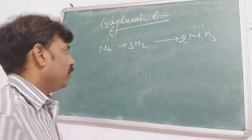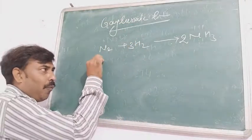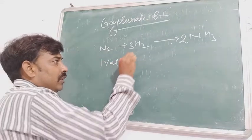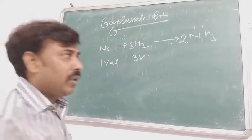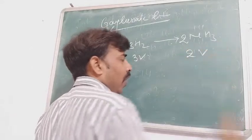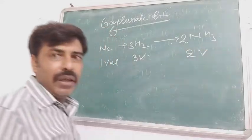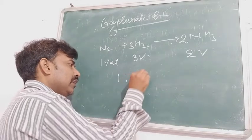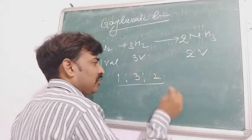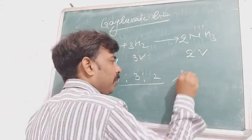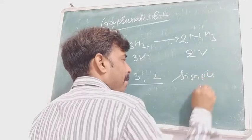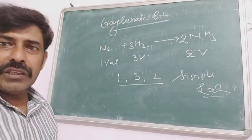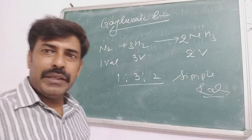Taking the reaction where nitrogen reacts with hydrogen to yield ammonia: nitrogen is a gas, hydrogen is also gaseous, and ammonia is again a gas. When the reaction is balanced, one mole of nitrogen reacts with three moles of hydrogen to yield two moles of ammonia. So one volume of nitrogen reacts with three volumes of hydrogen to yield two volumes of ammonia — the ratio is 1:3:2, which is a simple ratio. This is the law of gaseous volumes by Gay-Lussac.